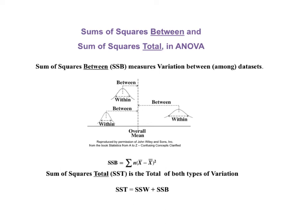In addition to sums of squares within, ANOVA has sums of squares between and sum of squares total. Sum of squares between is a measure of variation between or among data sets. For each data set, we calculate the deviation from its mean x bar to the overall mean of all the data points in all the data sets. SSB is the sum of n times each of these deviations. And finally, sum of squares total, SST, in ANOVA is equal to SSW plus SSB.